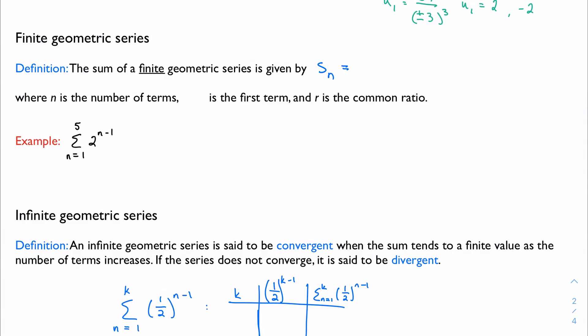The sum of a finite geometric series is given as follows: u₁ times 1 minus r to the n over 1 minus r. And of course, it comes with the catch that r cannot be 1. Obviously, we can't divide by 0. When n is the number of terms, u₁ is the first term and r is the common ratio.